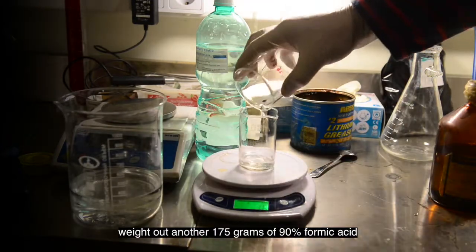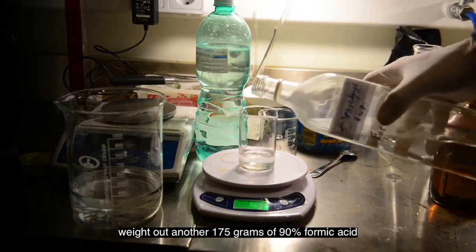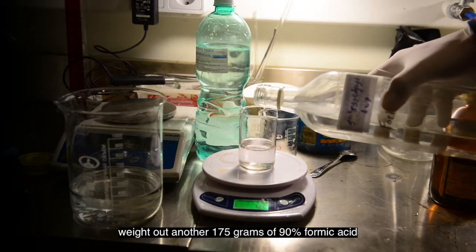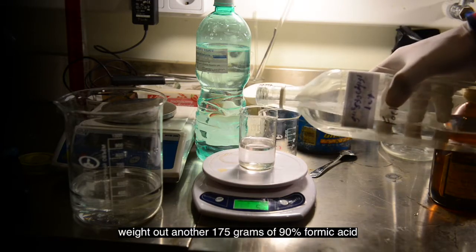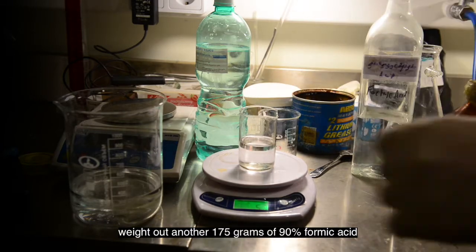In another beaker weight out 175 grams of 90% formic acid. In the video, we made a mistake and measured only a third of the required quantity. Because of this, we had to add a missing acid.